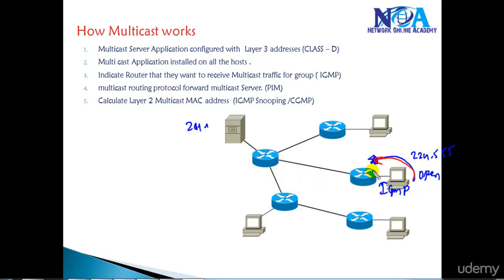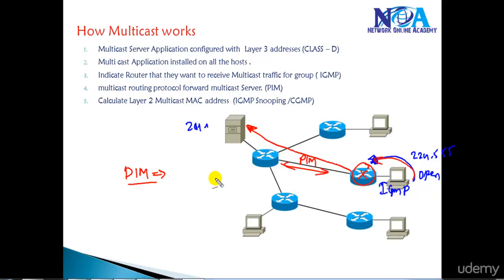The next step is: once the request is sent to the router, this router has to figure out where the server is — maybe on a different network — and how to reach that particular server. That is done by multicast routing protocols. Most commonly we use a protocol called PIM — Protocol Independent Multicast. IGMP handles host-to-router communication, and the router uses PIM as a kind of routing to find the multicast server on a different network. We'll talk about these protocols in more detail later.